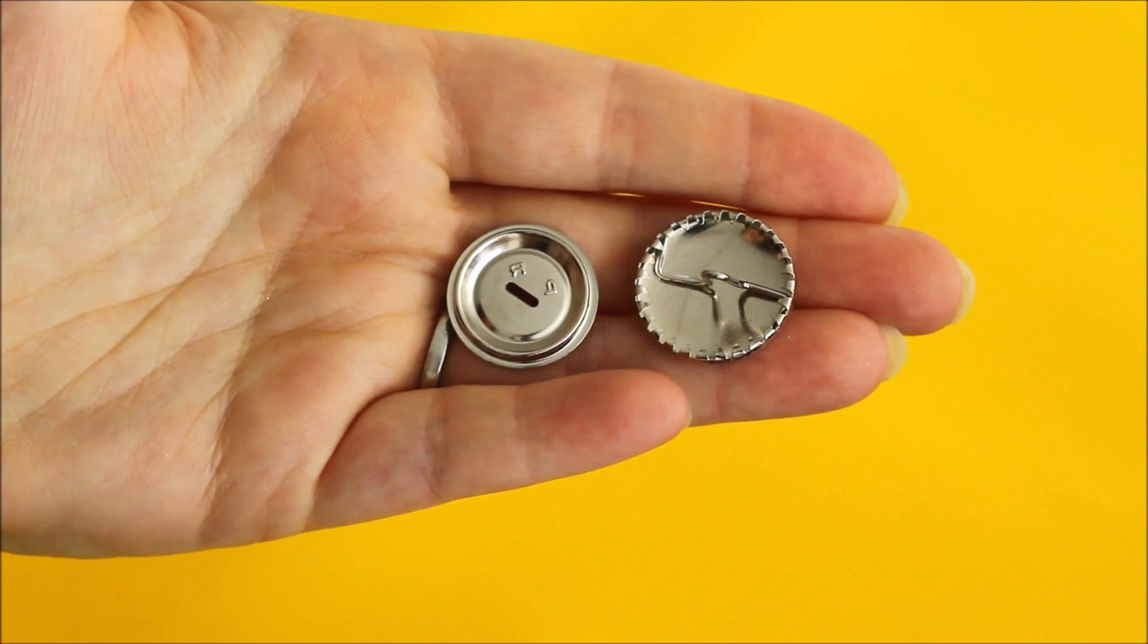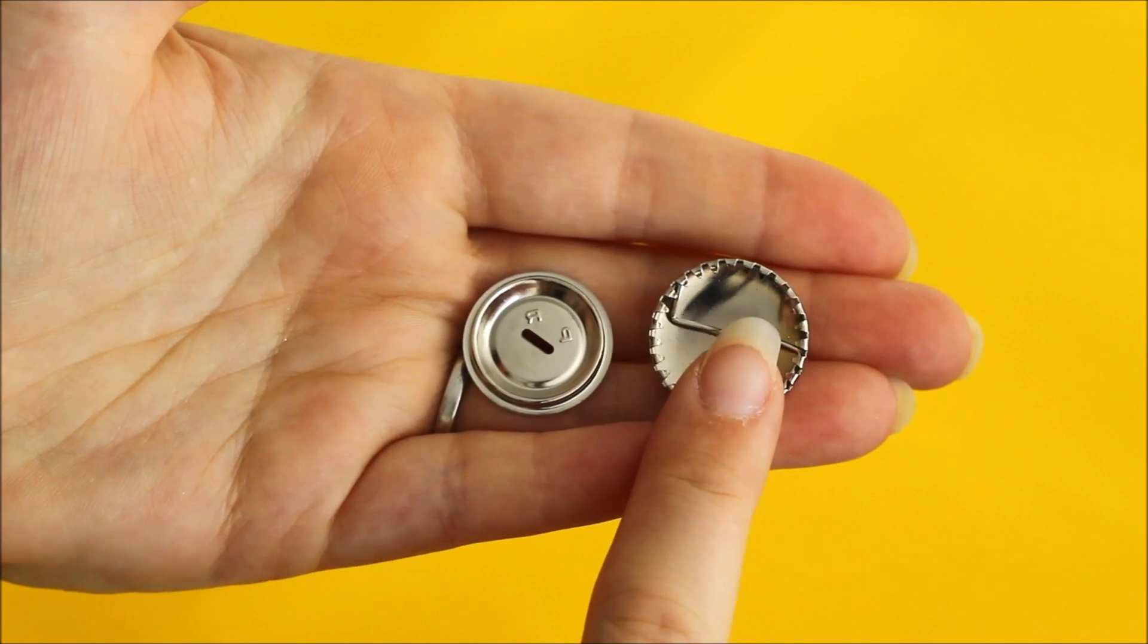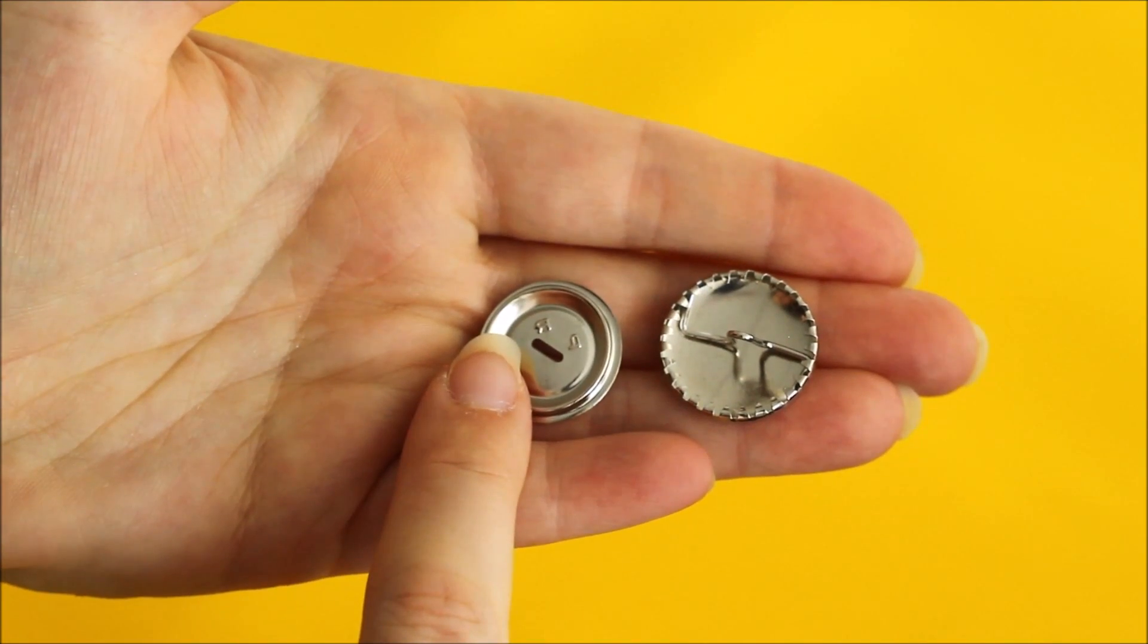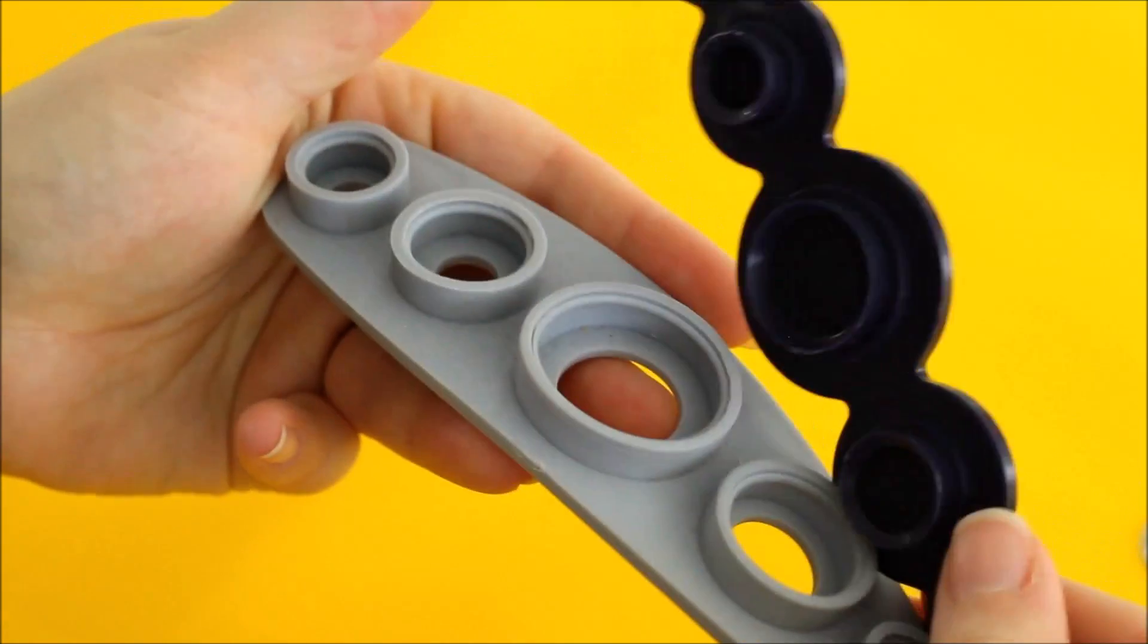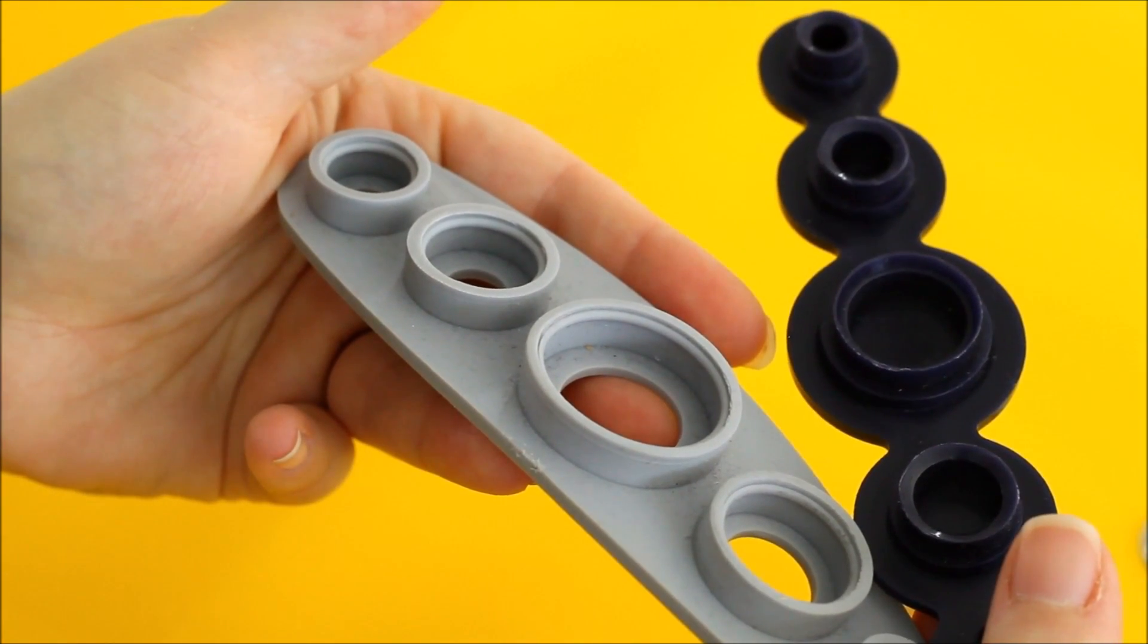So first up you need your two parts for your buttons. This is going to be your front and then this one is going to be the back. Then you need your button tool. So this tool comes apart and then you can put your button pieces inside.